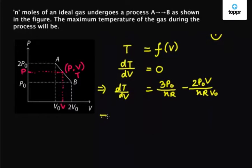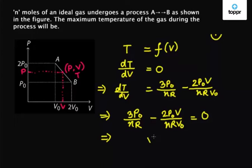Equating this equation to 0 we get 3P0 / nR - 2P0V / (nR·V0) equals 0, which implies V equals 3/2 V0. So at this volume we get the maximum temperature of the gas.